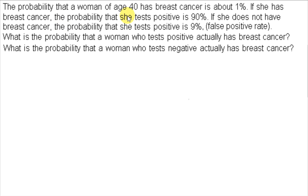The probability that a woman of age 40 has breast cancer is about 1%. If she has breast cancer, the probability that she tests positive is 90%. If she does not have breast cancer, the probability that she tests positive is 9%. What is the probability that a woman who tests positive actually has breast cancer?